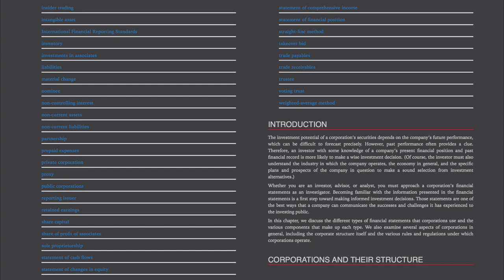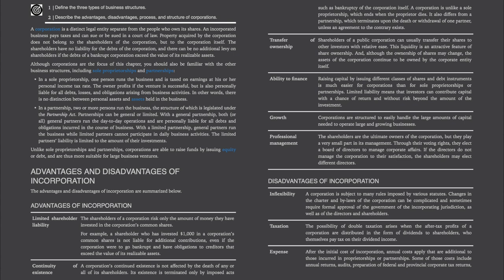Corporations and Their Structure. A corporation is a distinct legal entity separate from the people who own its shares. An incorporated business pays taxes and can sue or be sued in a court of law. Property acquired by the corporation does not belong to the shareholders, but to the corporation itself. The shareholders have no liability for the debts of the corporation, and there can be no additional levy on shareholders if the debts of a bankrupt corporation exceed the value of its realizable assets. Although corporations are the focus of this chapter, you should also be familiar with the other business structures, including sole proprietorship and partnerships.